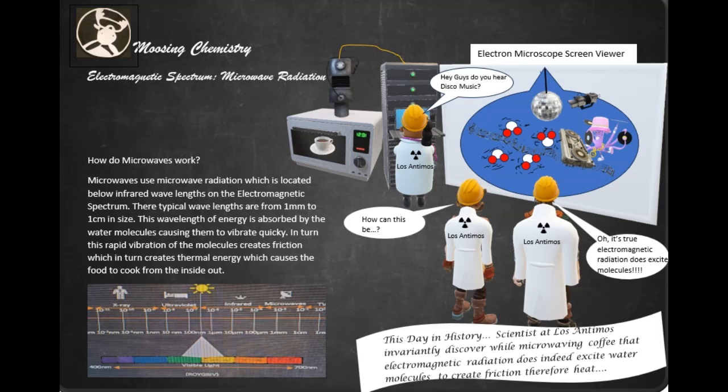How do microwaves work? Microwaves use microwave radiation, which is located below infrared wavelengths on the electromagnetic spectrum. If you look at that picture, that electromagnetic spectrum at the bottom of the slide there, you notice that right below visible light, which is located right here, is infrared energy. Microwaves themselves are actually located just below the infrared wavelengths.